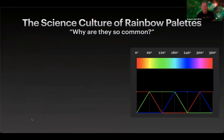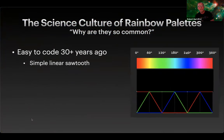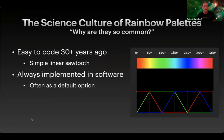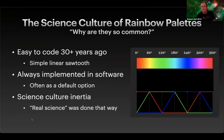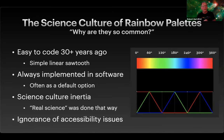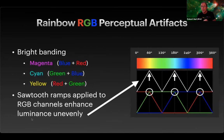What about the science culture of rainbow palettes — why are they so common? The reason is fundamentally traceable to the fact that they were easy to code over 30 years ago in software, because it was just a simple linear sawtooth applied to the red, green, and blue channels. As such, it was always implemented in software, often as the default option. Then science cultural inertia kicks in — that's the way real science was done, the way your advisor and grand-advisor did their data plots. Today it gets perpetuated partly because of ignorance of the accessibility issues. One perceptual reason it creates artifacts: to create secondary colors — magenta, cyan, and yellow — you actually have to turn on both blue and red pixels, so the screen looks brighter, creating an artificial bright-dark pattern that mangles the data set.